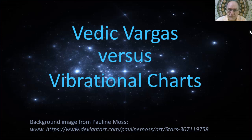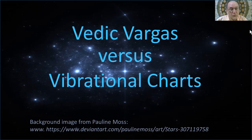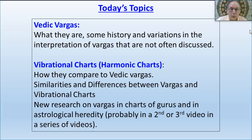I'm going to explain what the similarities and differences are. We're also going to look at how the use of Vargas and the interpretation of Vargas has changed over time. We're also going to see some new research on applying Vargas — or we can call them vibrational charts — to heredity, like an astrological heredity, what's in the charts of spiritual gurus, things like this. We'll see some integration of ideas from Vedic astrology with ideas from vibrational astrology. This will probably take two or three or four videos — a series of East-West integration.